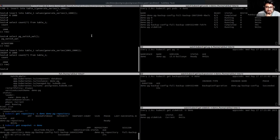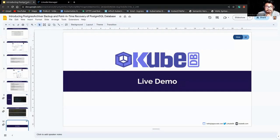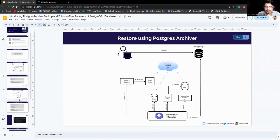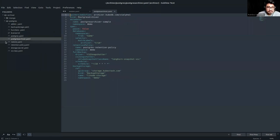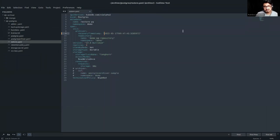Now let's see how we can restore a Postgres database using the Postgres Archiver. Going back to the slide — this is our architecture for restore. For restore, the user first creates a Postgres database where they specify whether they want to restore the database or not. Let's first see the Postgres restore manifest. In the restore manifest, we are specifying the database name as 'restorePG', which will run in the demo namespace.